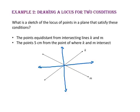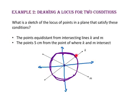Our second condition is the points that are 5 cm from the point where line K and line M intersect. Let's draw that intersection point, then draw and connect the set of points 5 cm from that point. Our second locus is a circle with a radius of 5 cm. The locus meeting both conditions — equidistant from lines K and M, and 5 cm from their intersection — will be the intersections of each locus. Those four yellow points are our locus of points in a plane satisfying the two conditions.